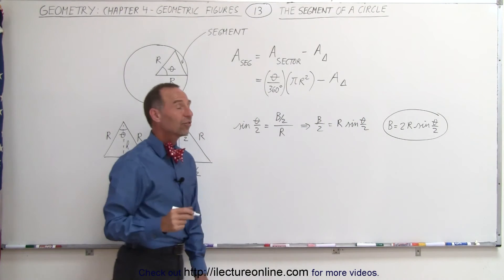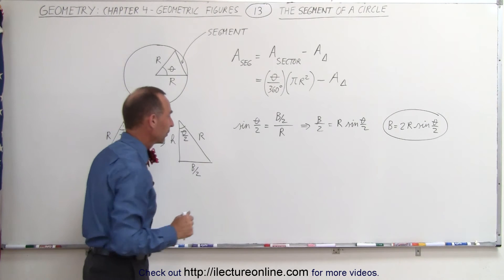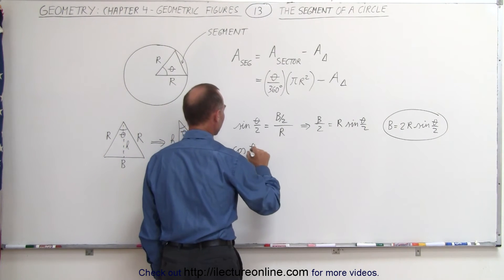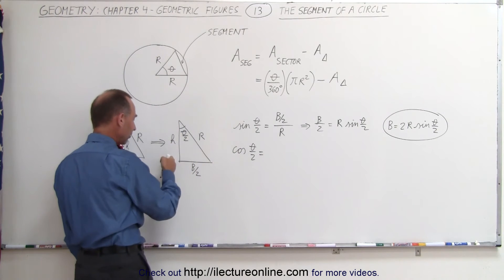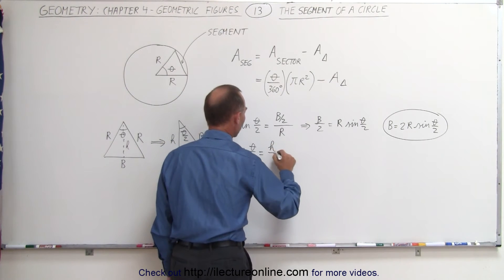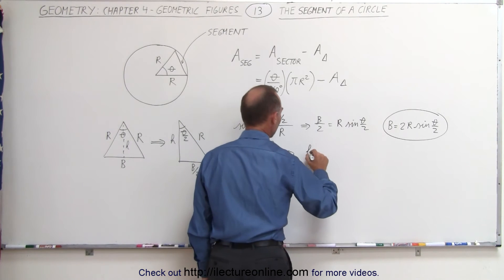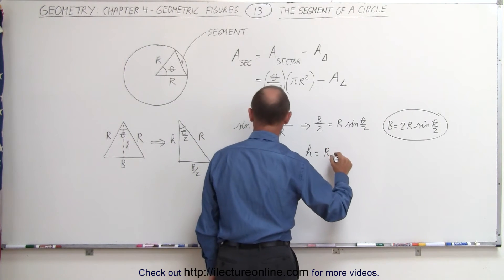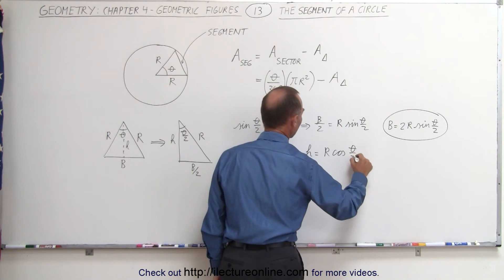We can do the same to find the height of the triangle. The cosine of theta divided by 2 is equal to the ratio of the adjacent side to the hypotenuse, which is h over r. This means h is equal to r times the cosine of (theta/2).